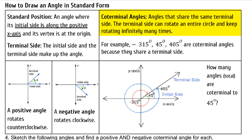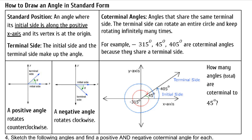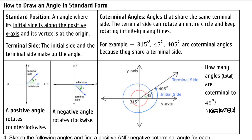Coterminal angles are angles that share the same terminal side. The terminal side can rotate an entire circle and keep rotating infinitely many times. For example, negative 315 degrees, 45 degrees, and 405 degrees are coterminal angles because they share a terminal side — they end in the same spot. How many angles total are coterminal to 45 degrees? At 405, I could add another 360 to get 765, and I would have another coterminal angle. I could keep adding 360, or from negative 315 subtract 360 to get more negative coterminal angles. Therefore, infinitely many angles are coterminal to 45 degrees.